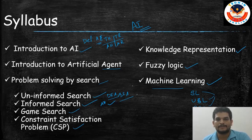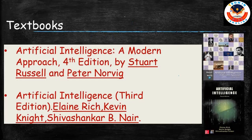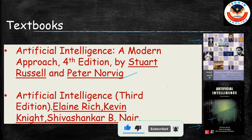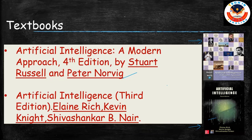Next, let's talk about the textbooks we are referring to for this course. The first is Artificial Intelligence: A Modern Approach — Fourth Edition (Russell & Norvig). The second is Artificial Intelligence — Third Edition by Rich and Knight. If you directly pick up these textbooks and try to read them, you may get demotivated. They are very big textbooks, so it's great if you can understand concepts directly from them, but it's not easy.